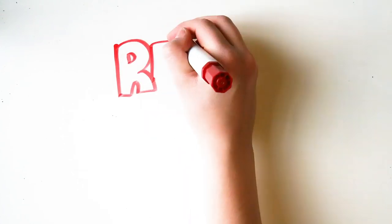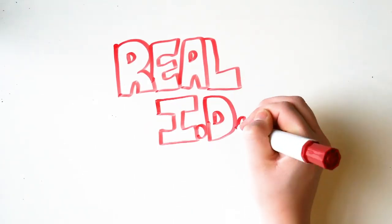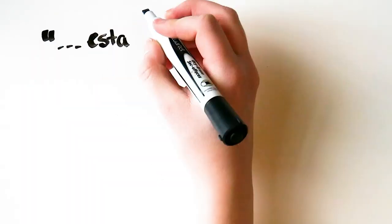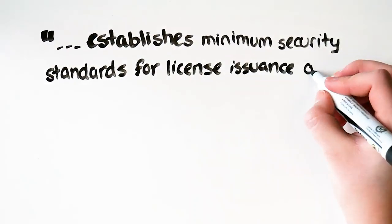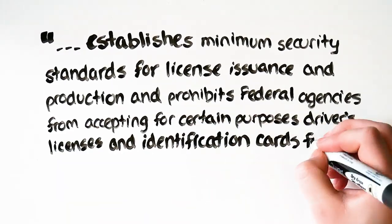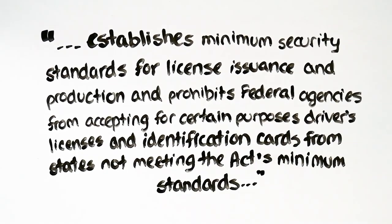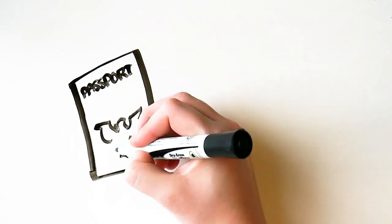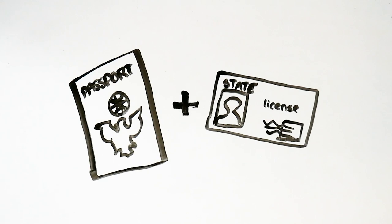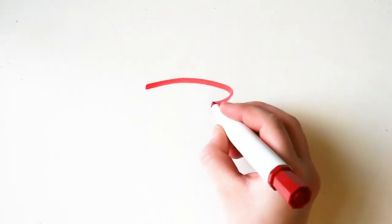A primary concern for many heading into 2020 is the October deadline for the REAL ID Act. The REAL ID Act establishes minimum security standards for license issuance and production and prohibits federal agencies from accepting for certain purposes driver's licenses and identification cards from states not meeting the Act's minimum standards. In other words, the REAL ID Act is changing the way we fly domestically to require a REAL ID or two valid forms of identification to get past airport security.